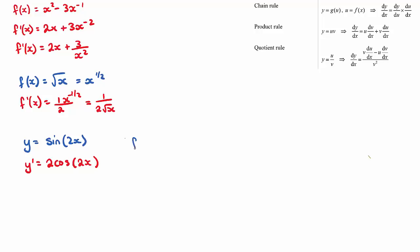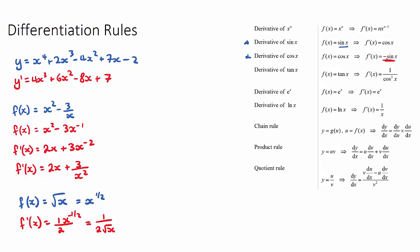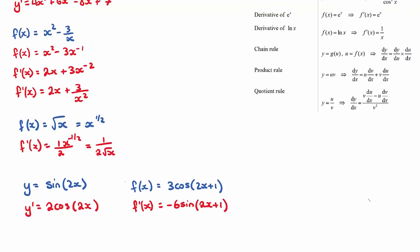If f(x) equals 3 cos(2x plus 1), we want to find f dash x. Cosine derives to negative sine. The derivative of what's inside the bracket is 2, which comes out and multiplies by the 3 at the front, giving negative 6 sine(2x plus 1). The bracket stays the same.